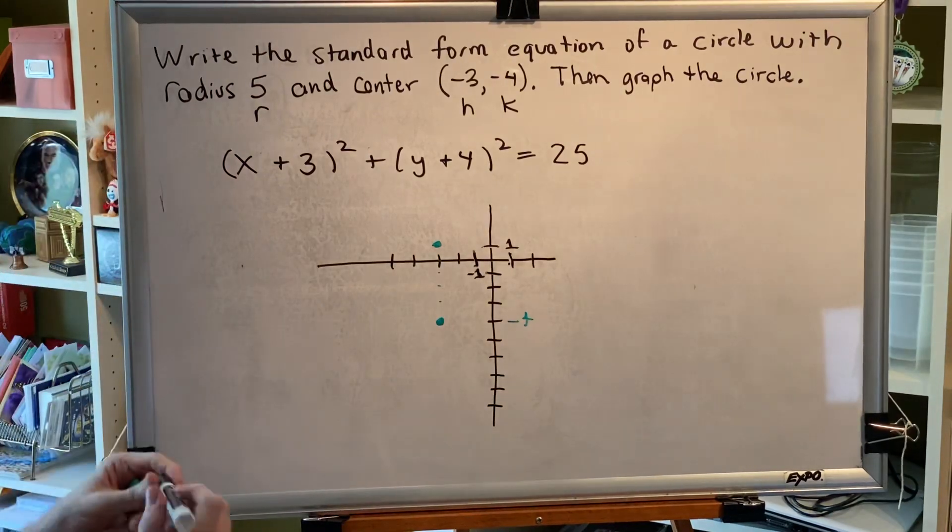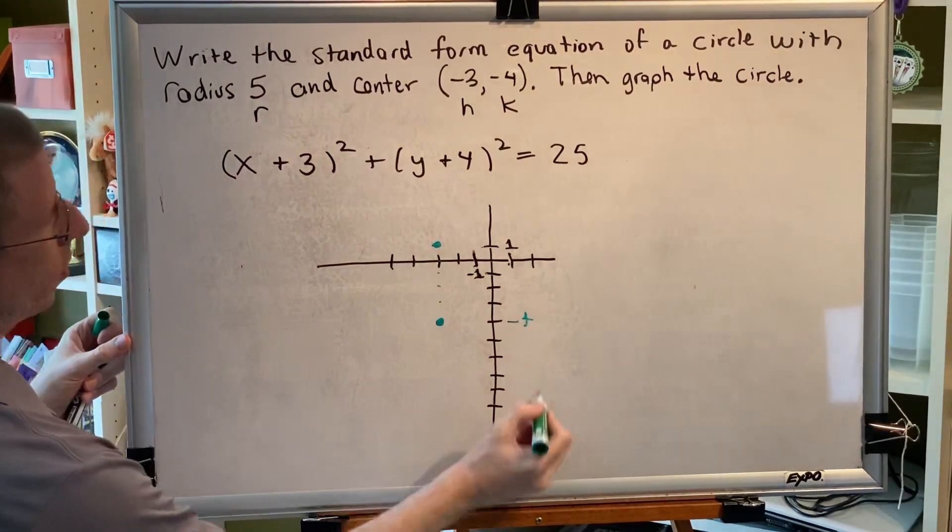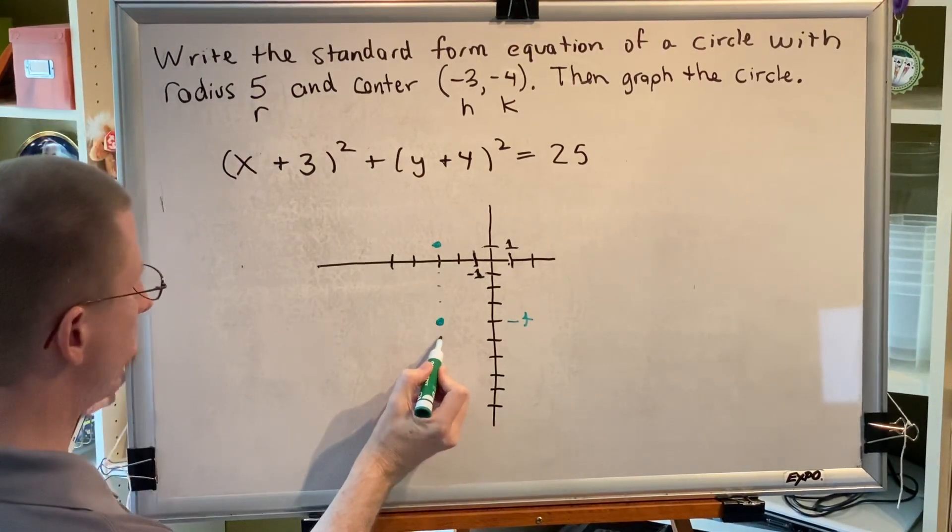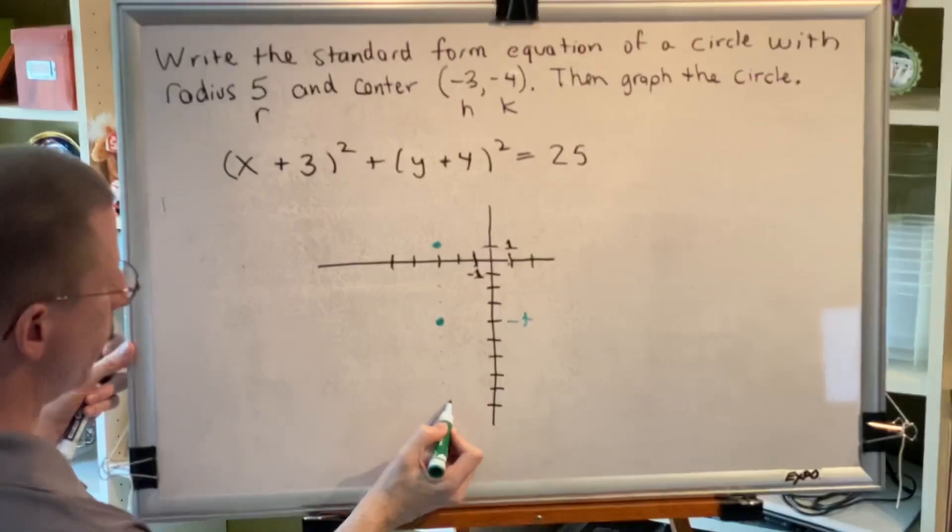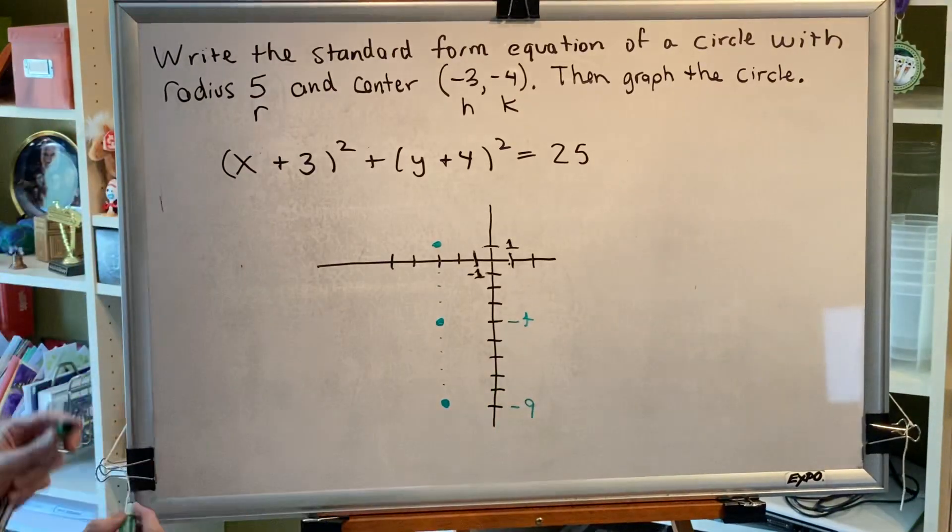All right, let's try going down. Right now we're at a height of negative four. So if we go down five, we should end up at negative nine. One step, two steps, three steps, four steps, five steps. And indeed, we end up at negative nine.